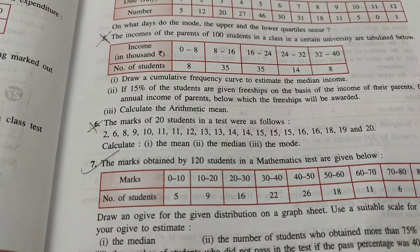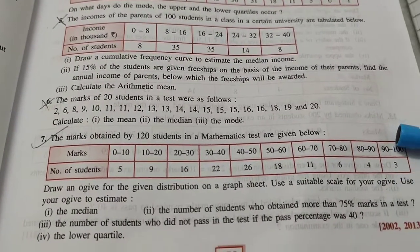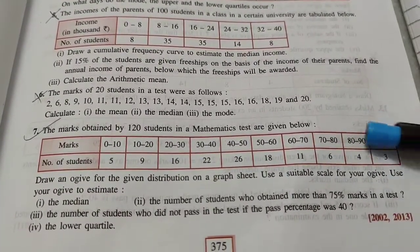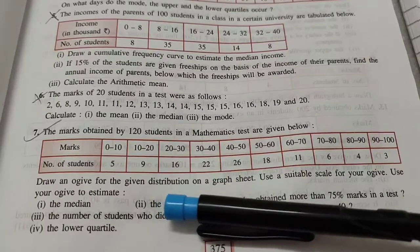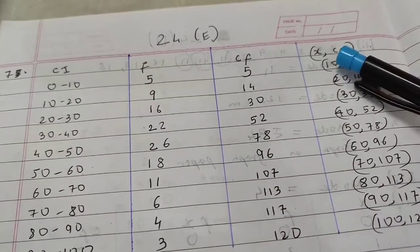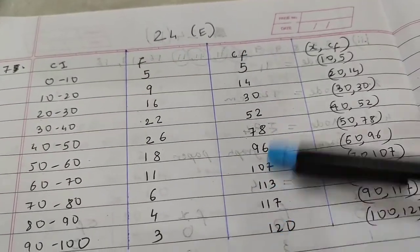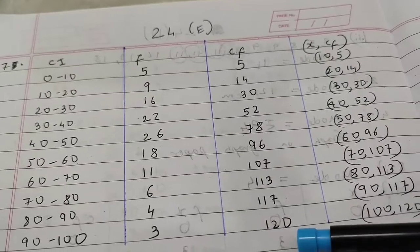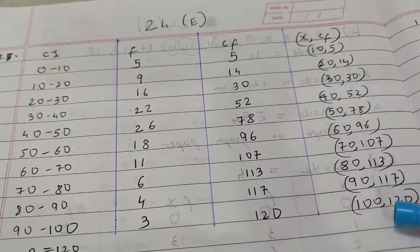Here some data is given - tabulated grouped data. We have to find the median first of all using an ogive. So we make a table. Remember, the upper class limit will be the x. We have to find the cumulative frequency which increases down the group. These are the points to be plotted.